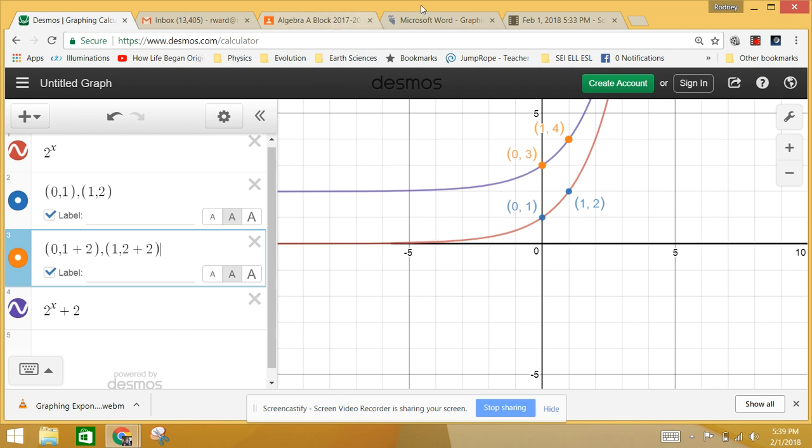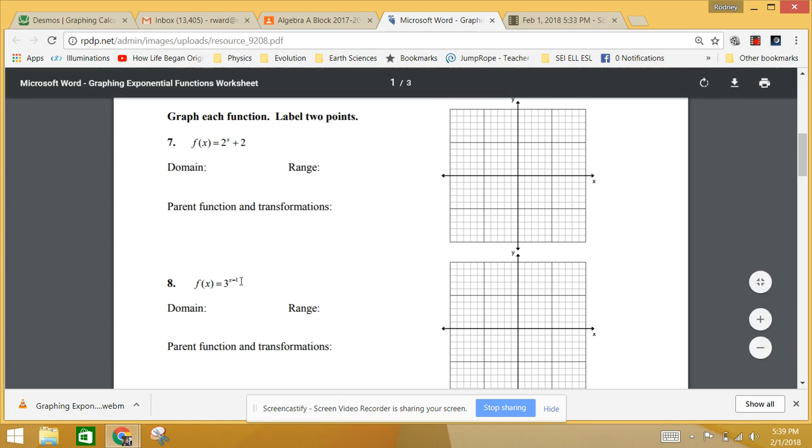And we look at another function here, f(x) equals 3 to the x minus 1. Instead of the function being altered, I'm altering my input. My input has this drag of minus 1. So in order to get any of the same inputs I normally would get for my parent function, I'm going to have to have x be 1 stronger. So this is telling me that I'm going to have a horizontal transformation where I'm going to have to take my parent function, which is 3 to the x, and take it 1 to the right. Let's start off with domain and range.